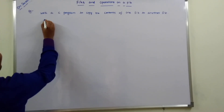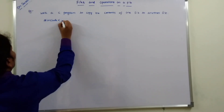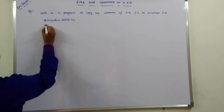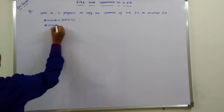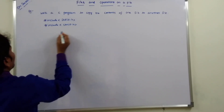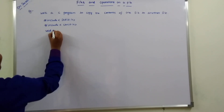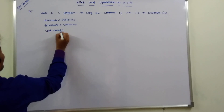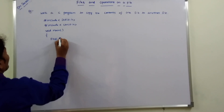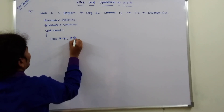So the program includes hash include stdio.h. Next we have void main, and we declare file pointer fp1, comma file pointer fp2.